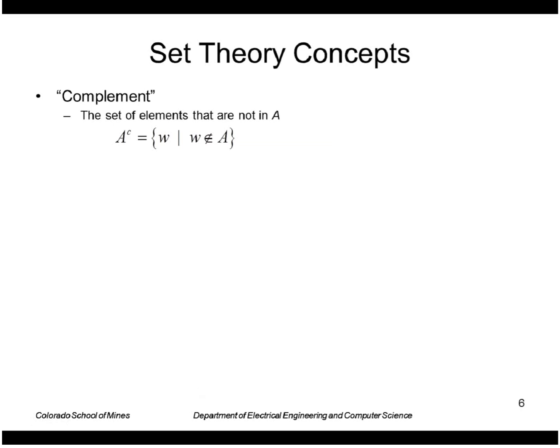The complement of a set is all the elements that are not equal to the set, so basically all w's such that w is not an element of A.